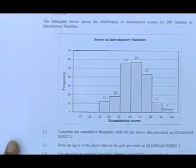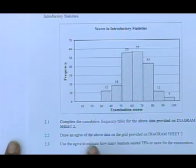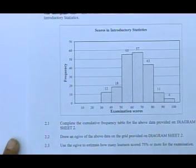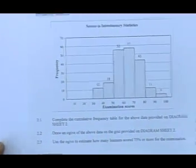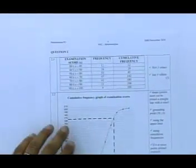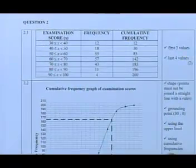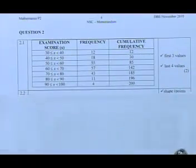And now they say, for 2.1, complete the cumulative frequency table for the above data provided on the diagram sheet. Complete the cumulative frequency table. So I'm going to go to my data sheet. Remember, this is given to you in the exam. And I'm going to just ask you to focus on your histogram for me, and I want us to go to the cumulative frequency data sheet.